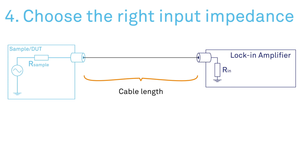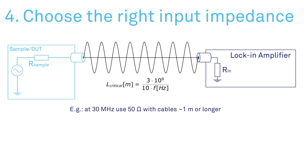...the cables need to be treated as transmission lines if their length is approximately one tenth of the wavelength or more. In this case...